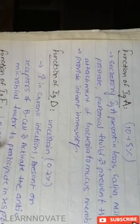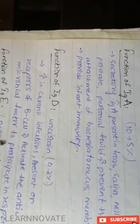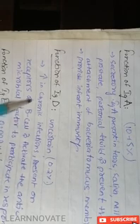The next one is immunoglobin D, which is a rare immunoglobin present in about 0.2 percent in our body. It increases in chronic conditions. This immunoglobin D is present on the receptors of the B cell and activates antimicrobial factors to participate in the immune response. The receptors of the B cell are attached with immunoglobin D - this point is very important to remember.